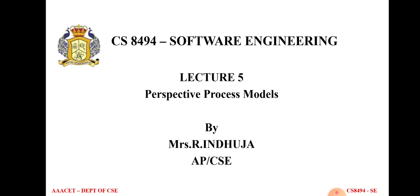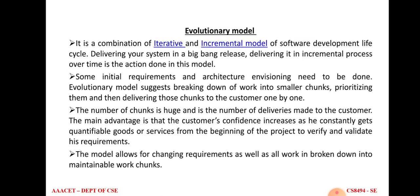In evolutionary process model, spiral model and prototyping models are there. We will start with evolutionary model. It is a combination of iterative and incremental model of software development life cycle. In this, the evolutionary model is used for breaking down the whole work — a large work into smaller modules or chunks — and giving some priority to those modules.